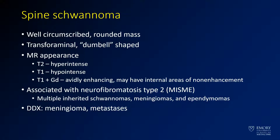Much like the schwannomas that occur in the internal auditory canal, they can have internal areas of necrosis or non-enhancement. They are associated with type 2 neurofibromatosis.